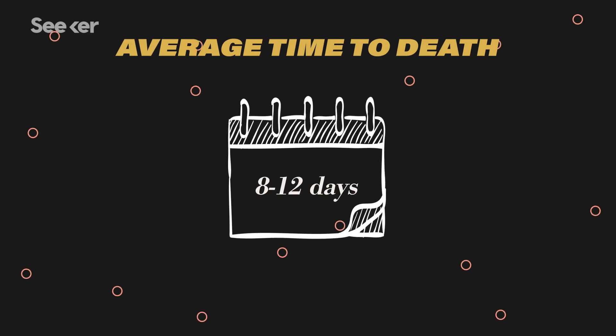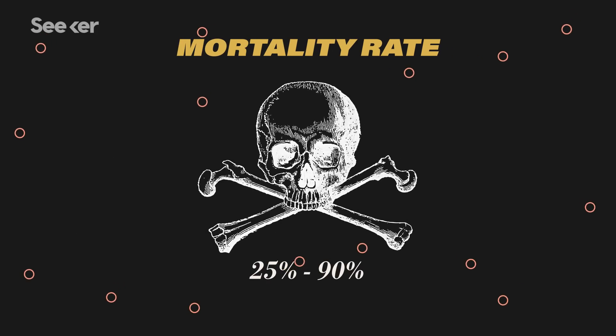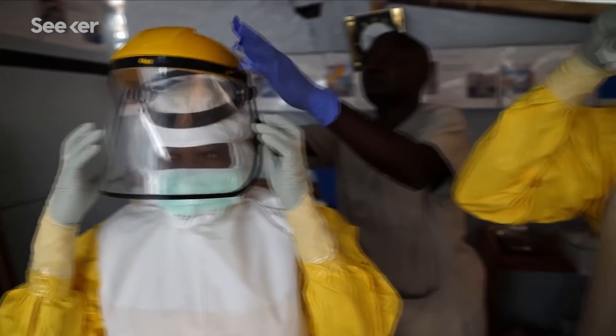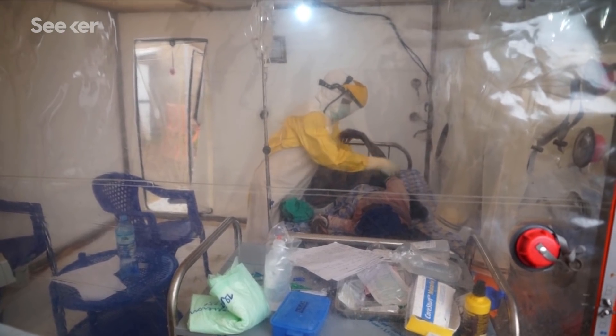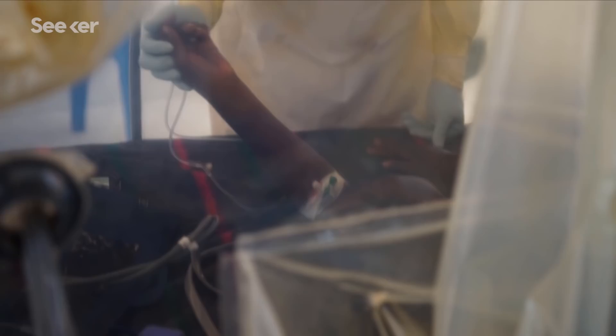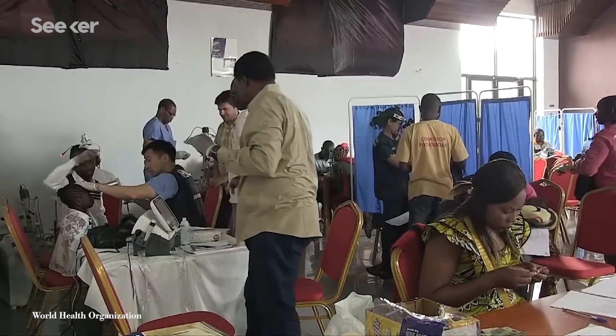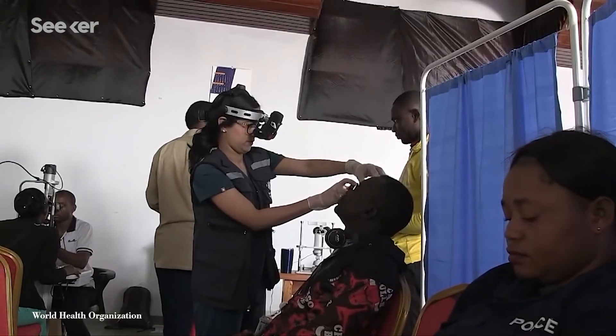There's no question about it, Ebola is terrifying. With the potential to kill within a week, and a death rate that's been as high as 90%, the specter of this violent disease is still very much at large in the Democratic Republic of the Congo. It's time to move from a purely reactive strategy, when there's an outbreak, we also need to think of primary prevention.